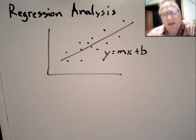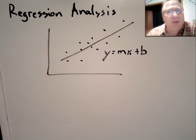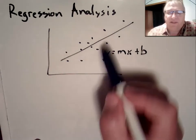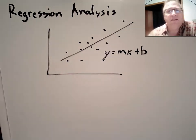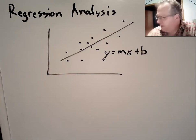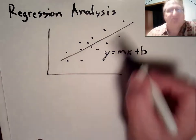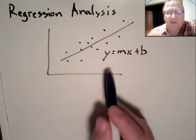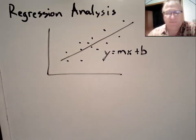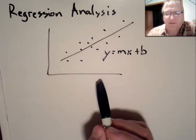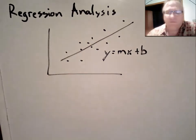Our analysis will create that best fit line, and then we're going to run a hypothesis test where our null hypothesis is that the slope of the line is actually zero. If we can reject that null hypothesis, we will accept that yes, there is a slope in that line and there is a relationship between the dependent variable and the independent variable.